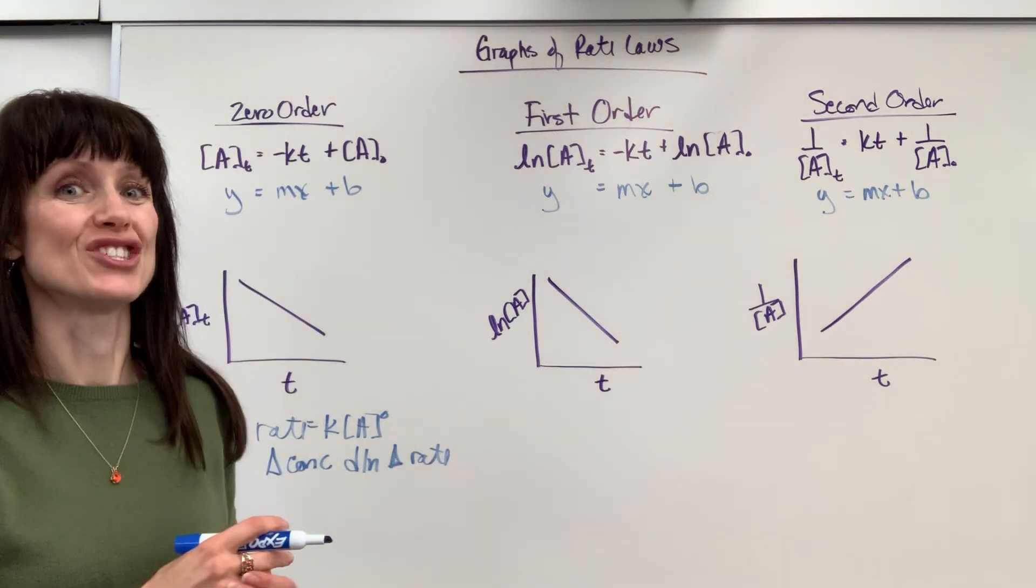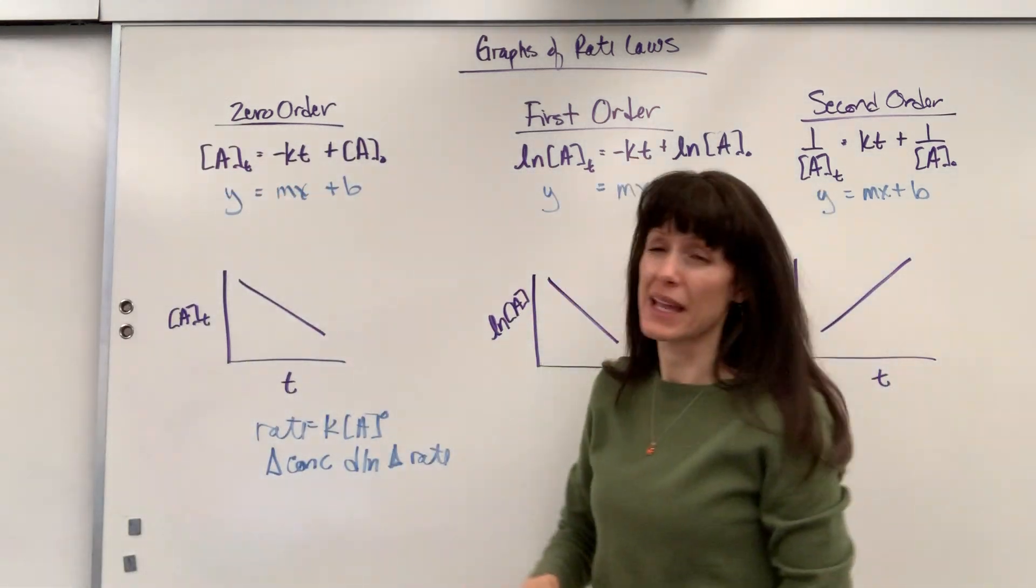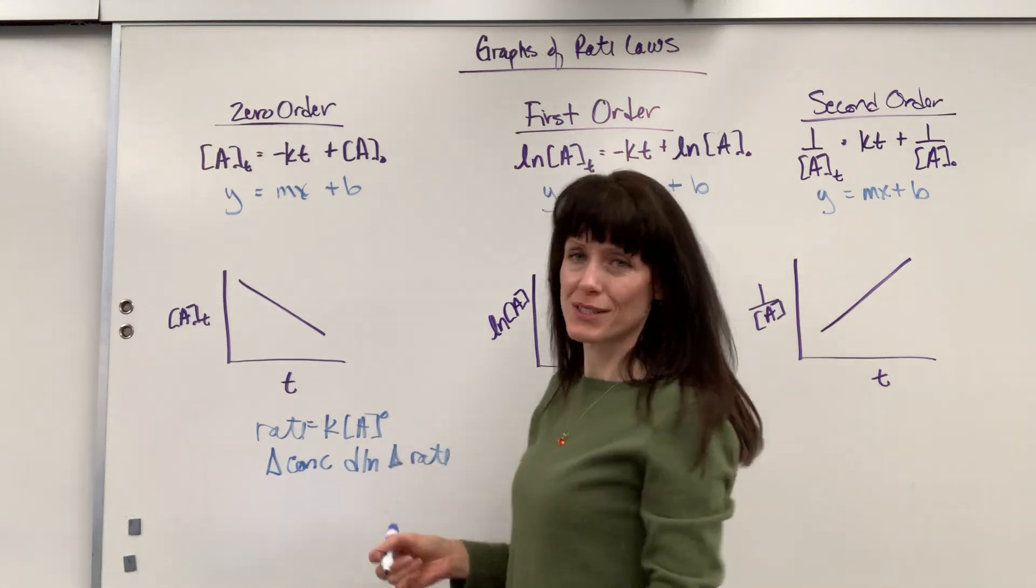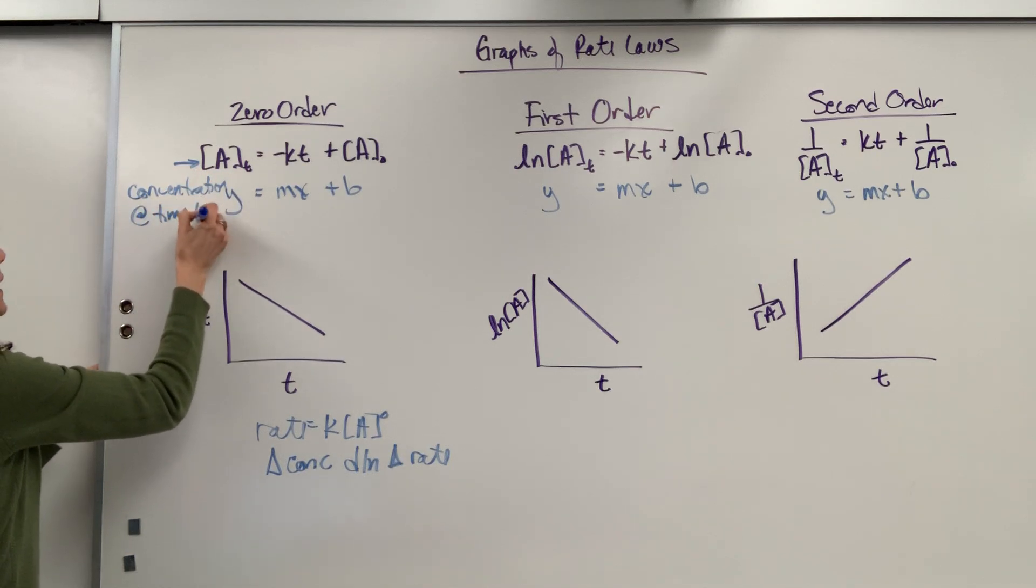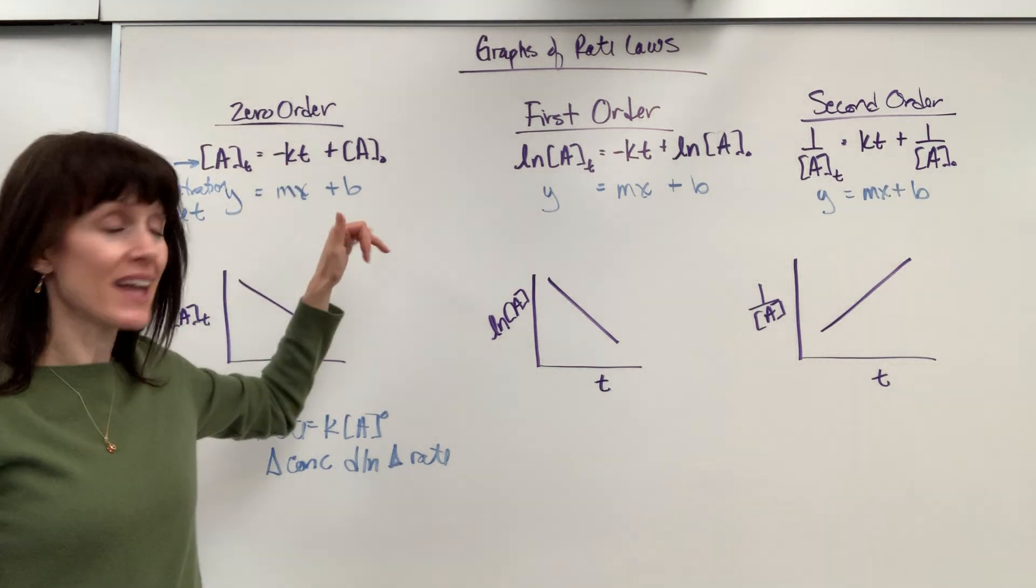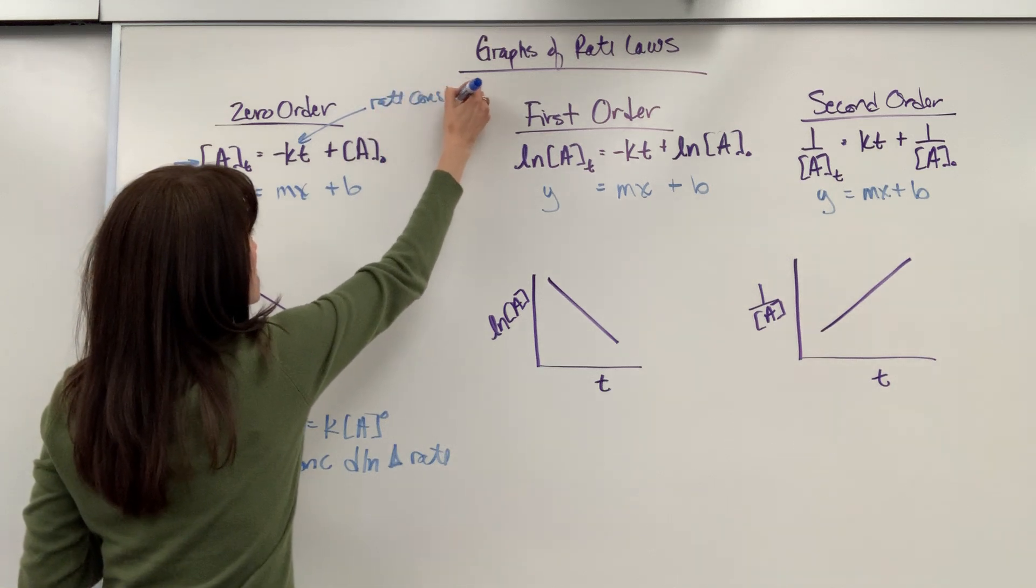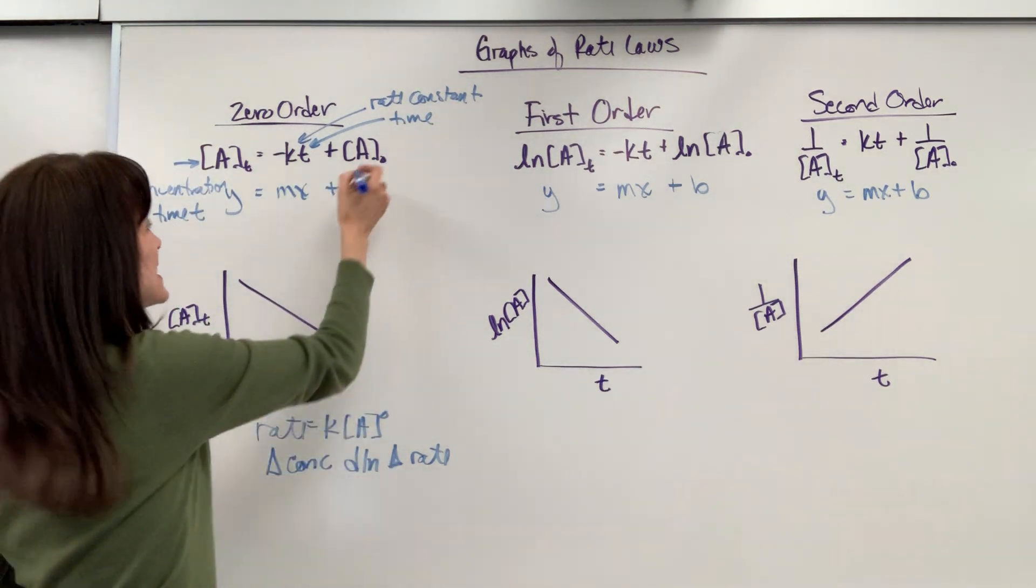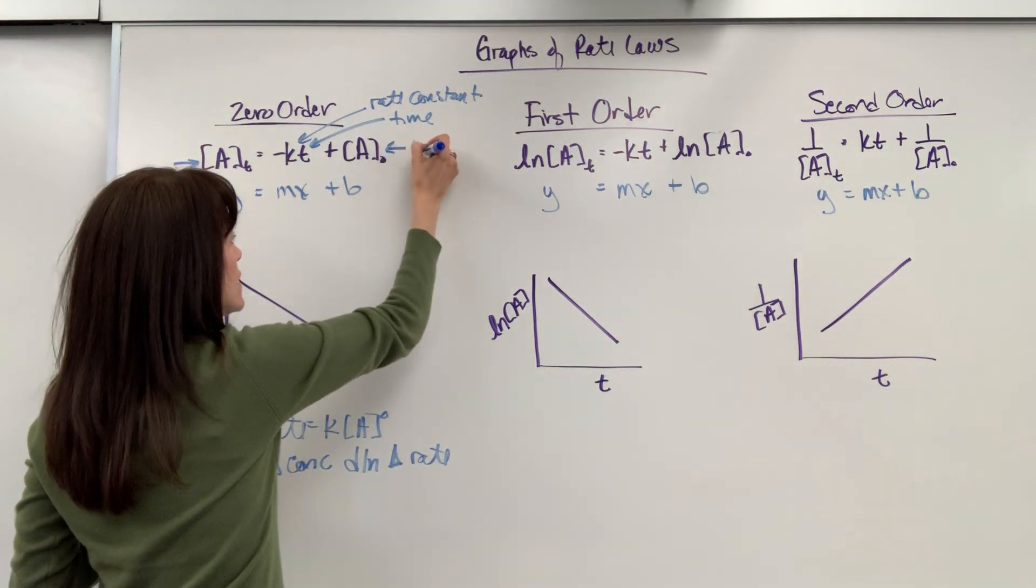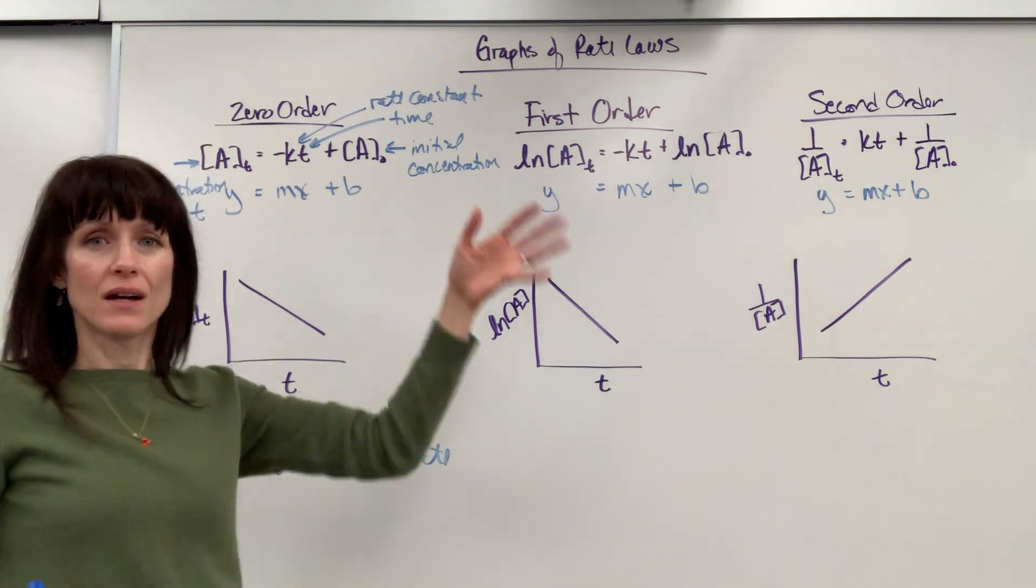Notice our equation. You're going to have A sub T, that is going to be concentration at time T. Then we're going to have K, that's our rate constant. T is our time. And A naught, that's the initial concentration. We're going to use all of these symbols in our different orders.